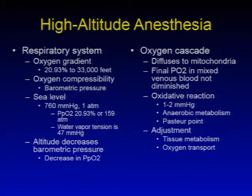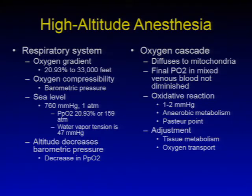At sea level, the barometric pressure is 760 mmHg, or one atmosphere. The partial pressure of oxygen at sea level, given the 21% oxygen gradient, is 159 mmHg. The water vapor tension is 47 mmHg.